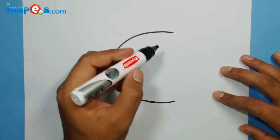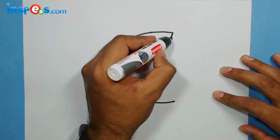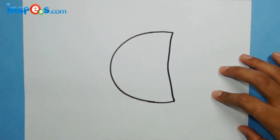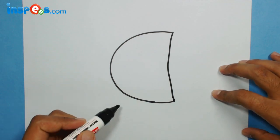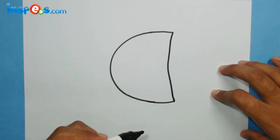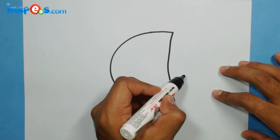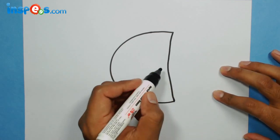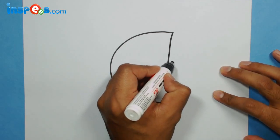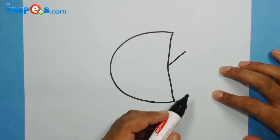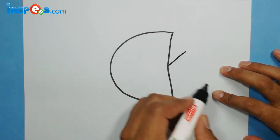Now almost the body of the fish is ready. We need to add a tail over here, so I'm going to add a tail by making a triangle - here's a line like this, another one, and another one.